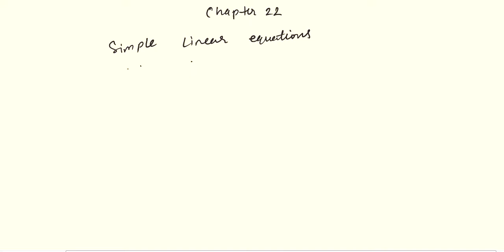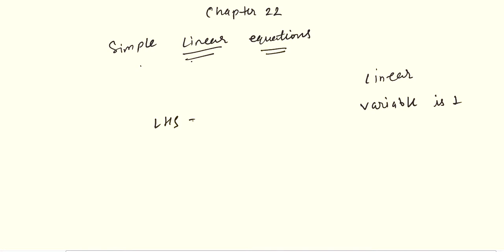Simple means easy calculations. Linear means the power of the variable is 1. Equations — as you know, whenever we have a left hand side and a right hand side, the expression is called an equation. For example, 4x minus 3 equals to 3x plus 8.